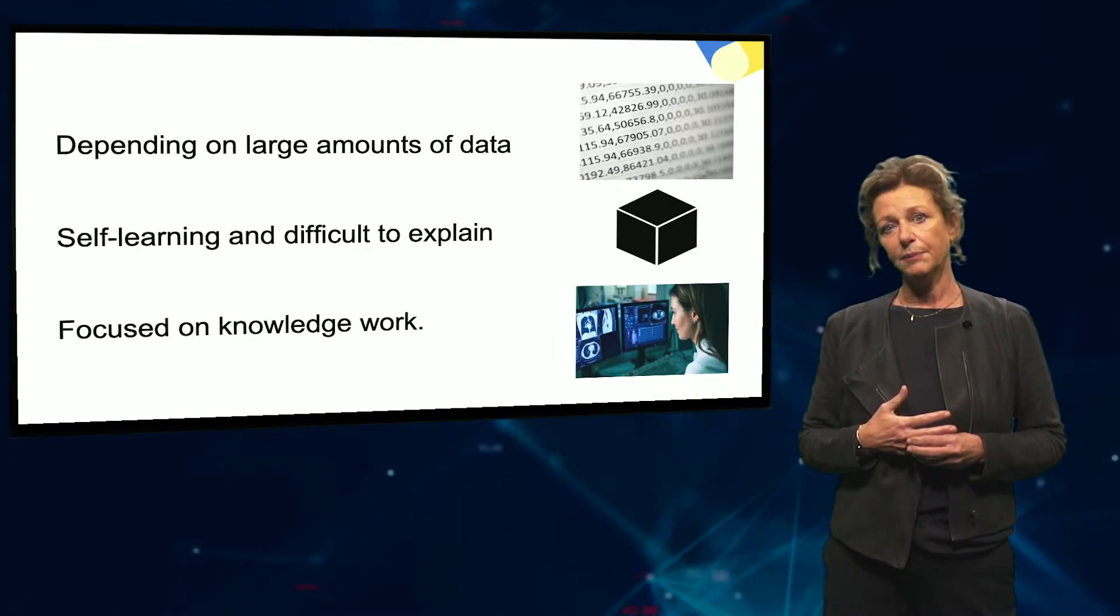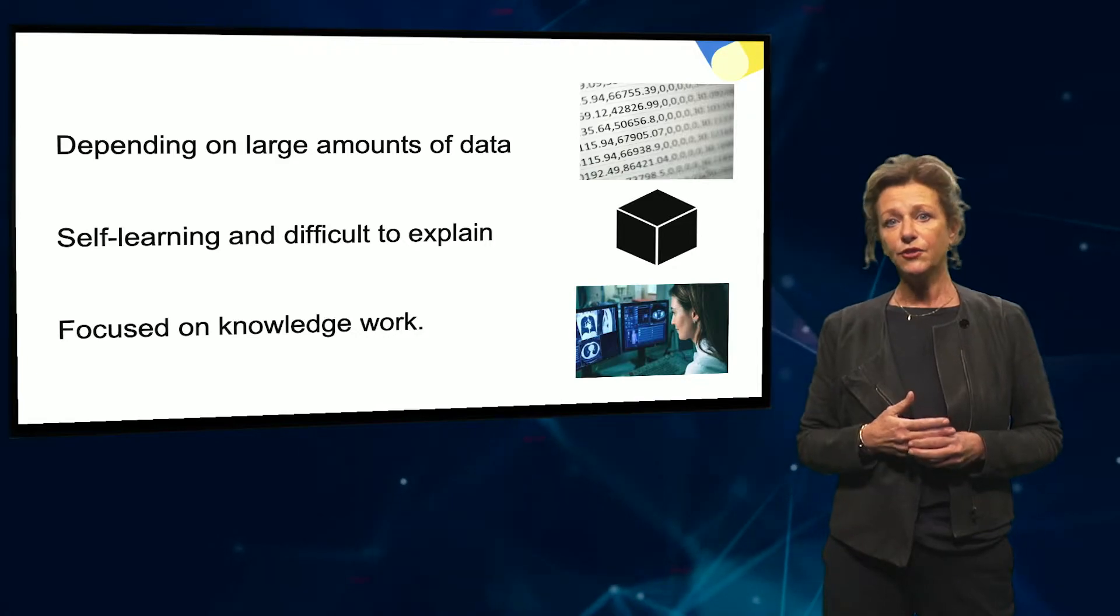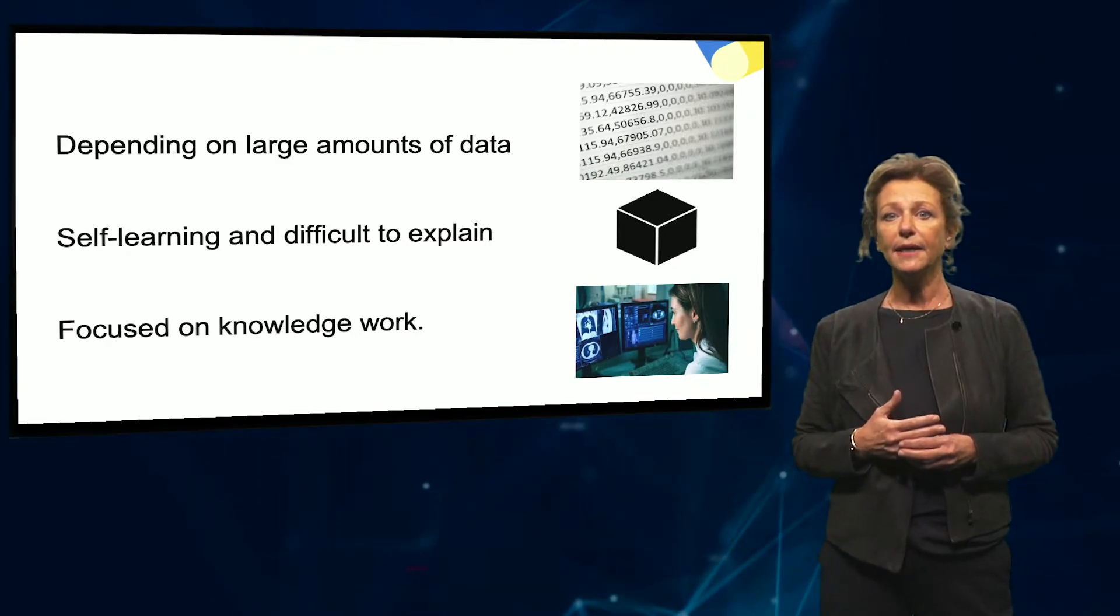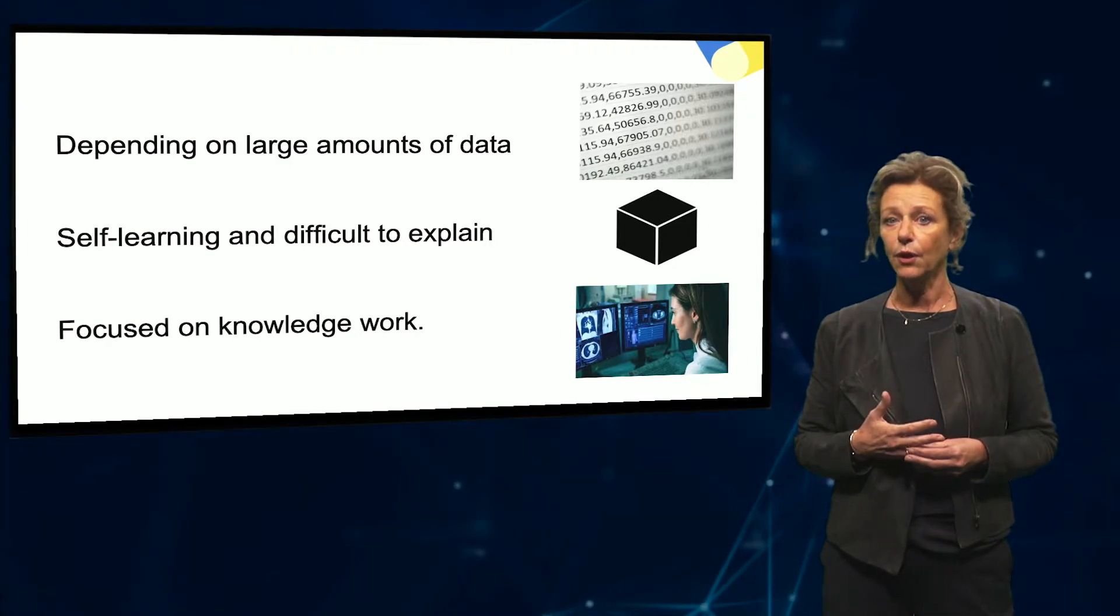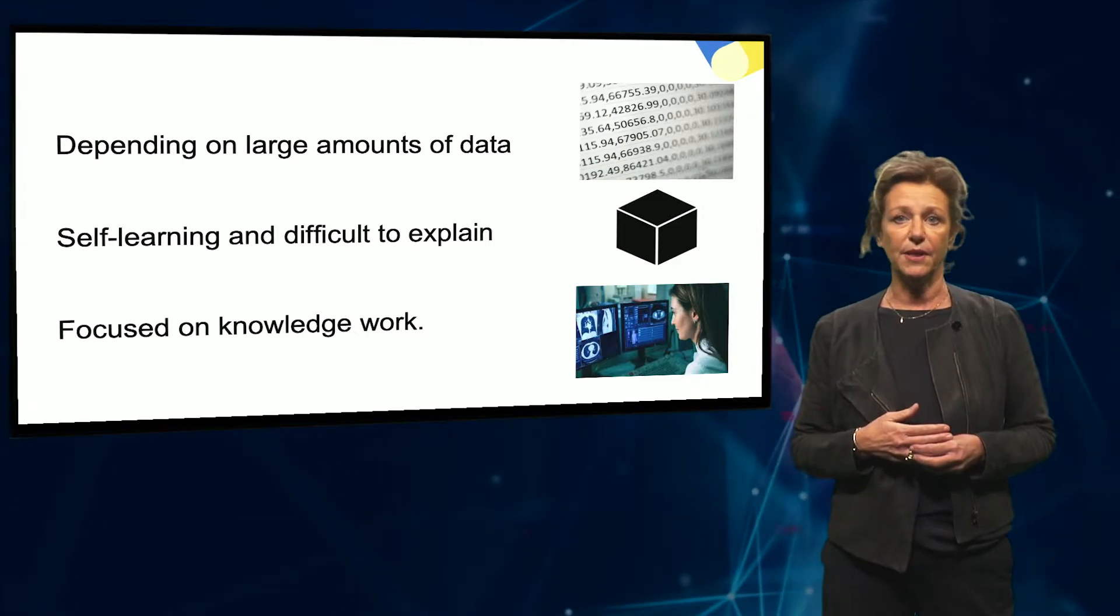Artificial intelligence, in particular machine learning, has three unique properties that make the technology different from what we know about traditional information technologies.